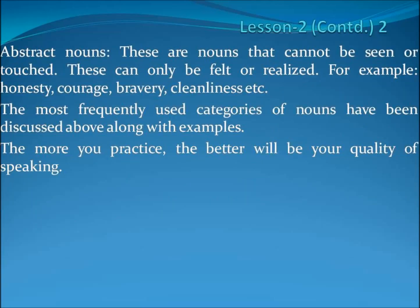In the last part of this lesson, we will discuss abstract nouns. These are nouns that cannot be seen or touched — they can only be felt or realized. For example, honesty, courage, bravery, kindness. The words mentioned in these examples can only be felt or realized; they cannot be seen or touched.